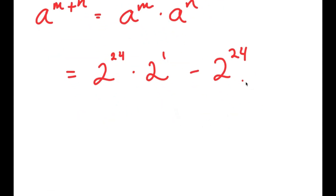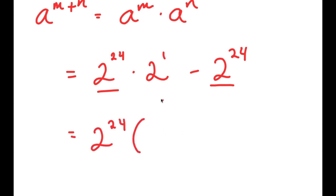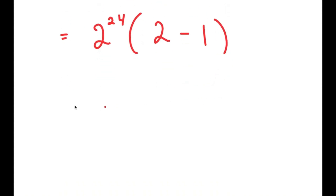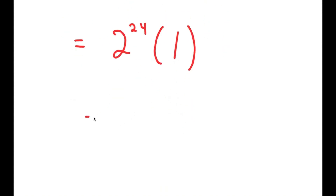From here I'm going to factor out 2 to the power of 24, because both terms contain 2 to the power of 24. Dividing through gives 2 to the power of 1 minus 1, so I get 2 to the power of 24 times (2 minus 1), which equals 2 to the power of 24 times 1. Anything times 1 is itself, so this is just equal to 2 to the power of 24.